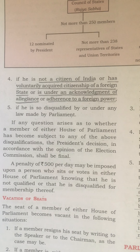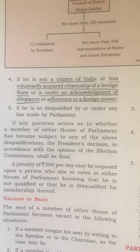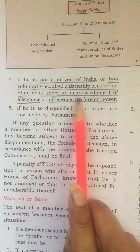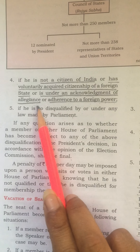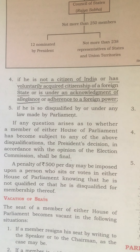Fourth condition: if he is not a citizen of India or has voluntarily acquired citizenship of a foreign state. Additionally, if he has willingly acquired the citizenship of some other country, or is under an acknowledgement of allegiance or adherence to a foreign power, or has accepted commitment to a group, cause, or belief of some other country — in such cases also, the person or member will be disqualified.